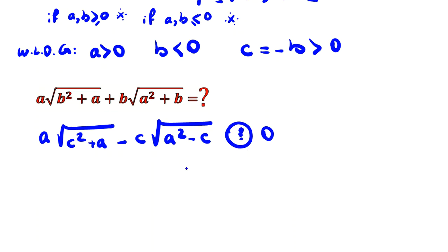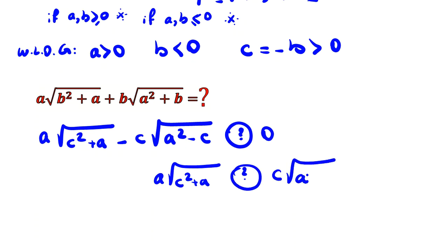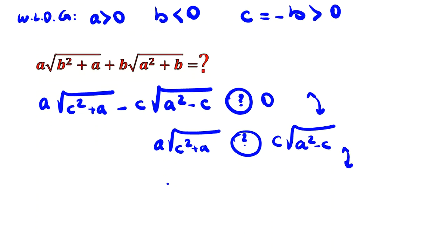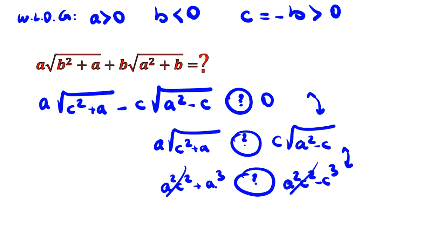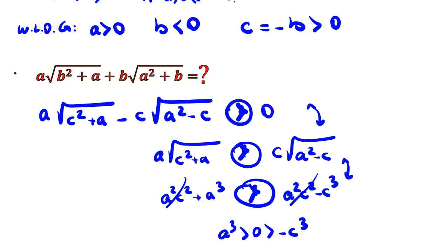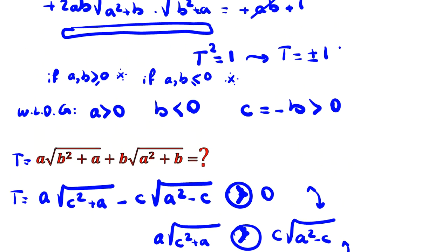I want to determine the sign of t. Comparing root(c² + a) versus root(c(a² − c)): squaring both sides (since both are positive) gives a²c² + a³ versus a²c² − c³. The a²c² terms cancel, leaving a³ > 0 and −c³ < 0. So this expression is greater, meaning t is positive.